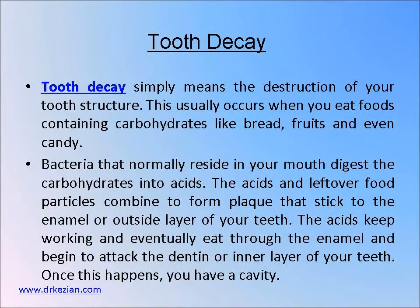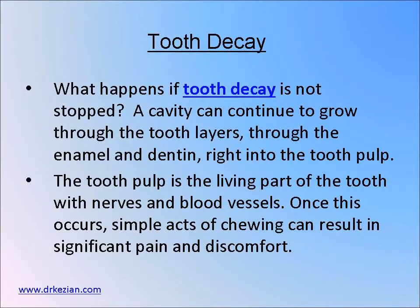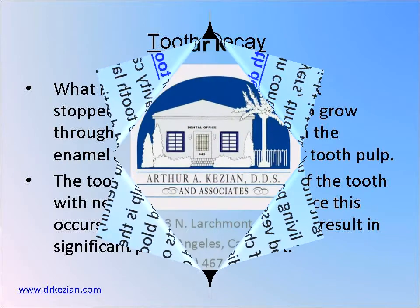Tooth decay simply means the destruction of your tooth structure. This usually occurs when you eat foods containing carbohydrates like bread, fruit, and candy. Tooth decay should be stopped because if not, it can continue to grow through the tooth layers, through the enamel and dentin, and right into the tooth pulp.